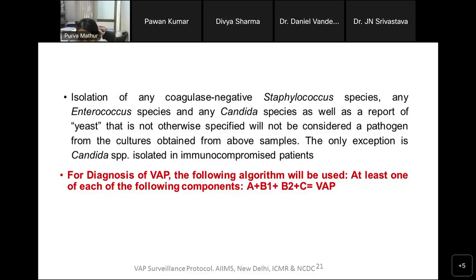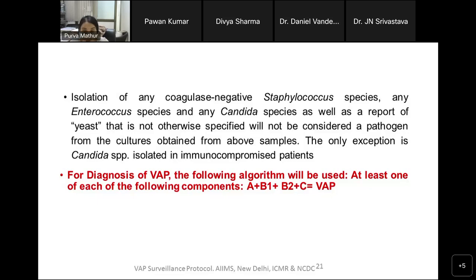Regarding the justification for pleural fluid as a criterion: pleural fluid is a completely sterile fluid, so any organism identified from it is significant. A bronchoscopic brush specimen is also very good because it collects cells from the alveoli through the brush. Even a BAL sample can get contaminated through upper respiratory flora while taking out the bronchoscope, so pleural fluid is equivalent to a lung aspirate — it is a very sterile fluid and therefore accepted as a diagnostic criterion.